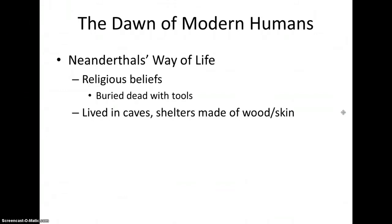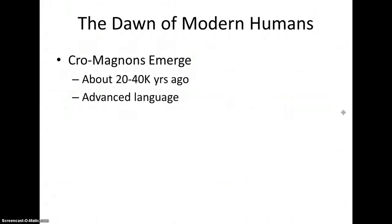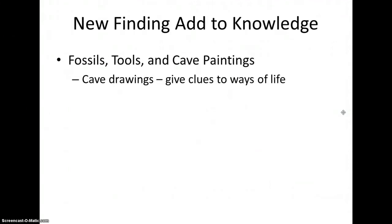Neanderthals lived in caves and shelters made of wood and skin. Cro-Magnans appeared about 40,000 years ago. They were physically identical to modern humans, hunted in groups, and were much better hunters than Neanderthals. They had advanced skill in spoken language and migrated from North Africa to Europe and Asia. Their population grew quickly, and they eventually replaced the Neanderthals. New fossil discoveries place hominids in Africa about 6 to 7 million years ago, and stone tools suggest tool-making began earlier than previously thought. Stone flutes suggest Neanderthals might have made music, and cave drawings of people and animals give clues to their ways of life.